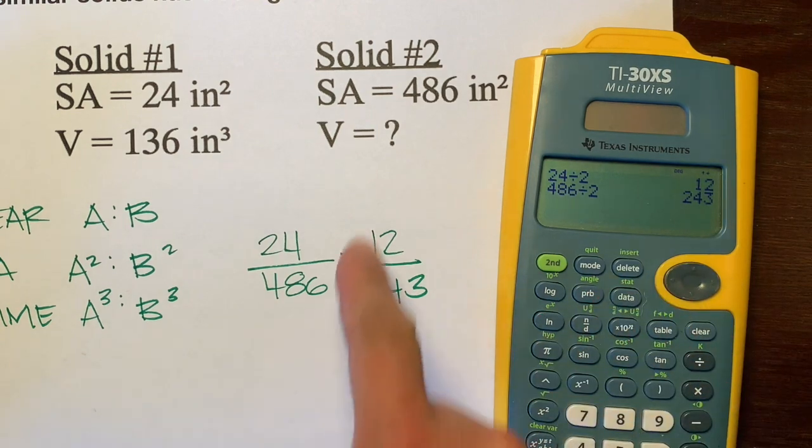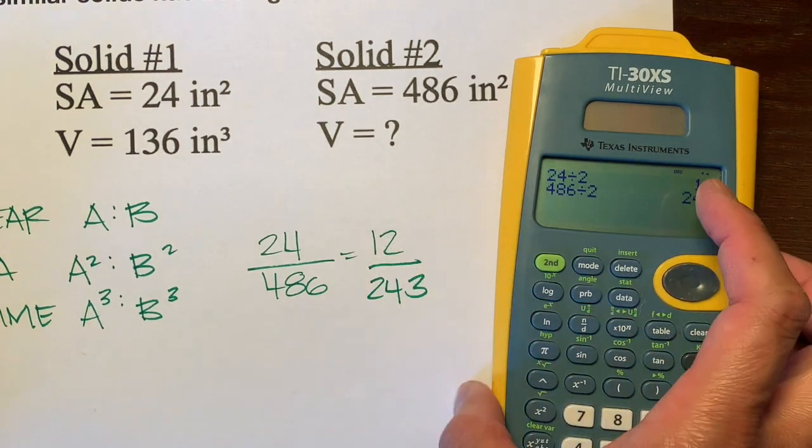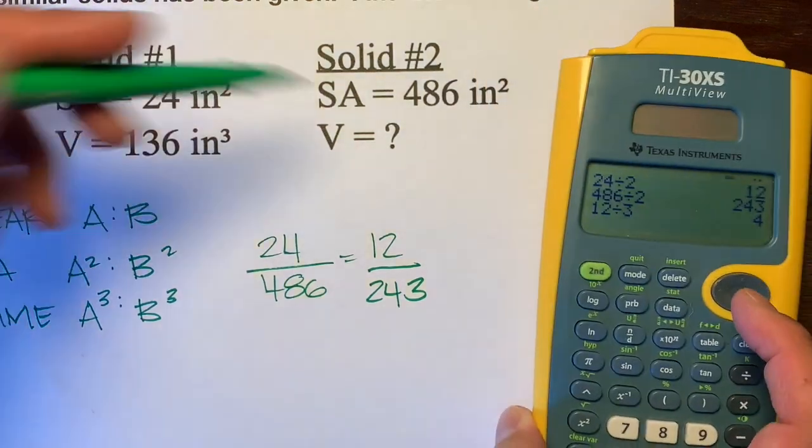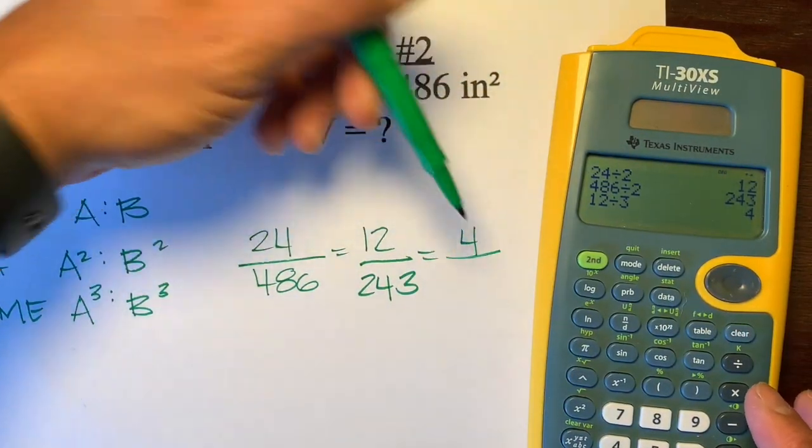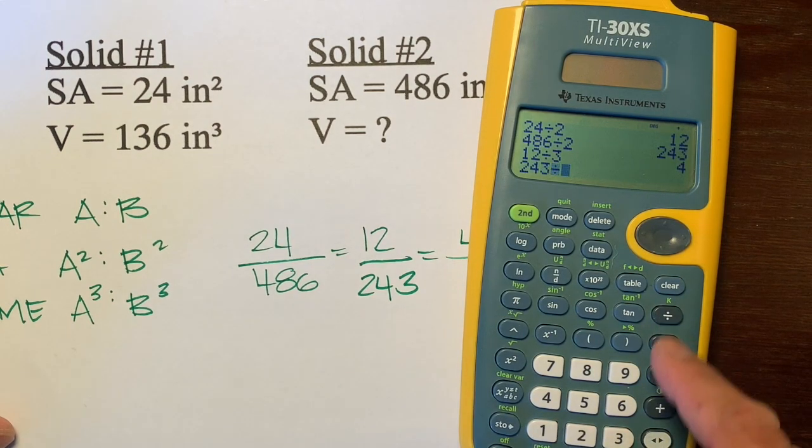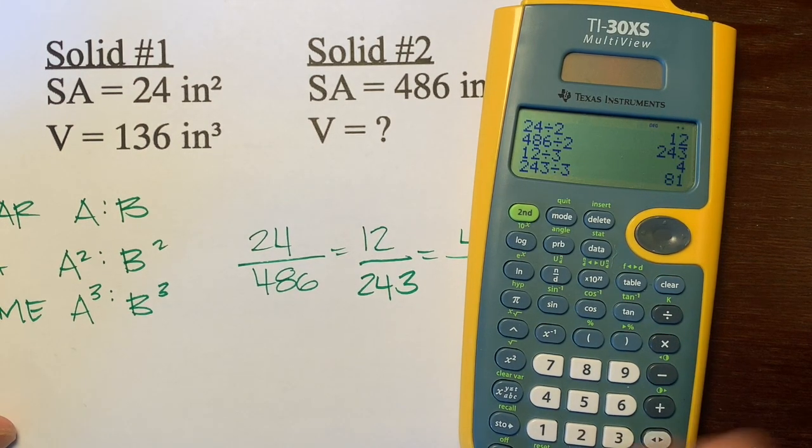And let's see if we could simplify this some more. It looks like both numbers can be divided by 3. So, 12 divided by 3 is 4. And 243 divided by 3 is 81.